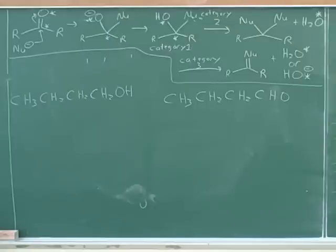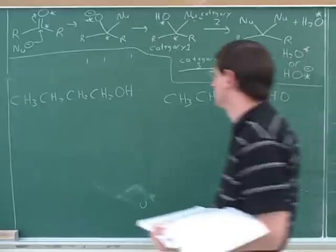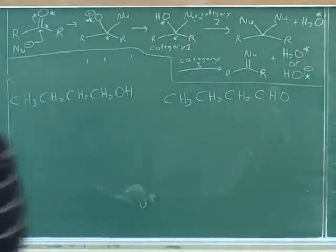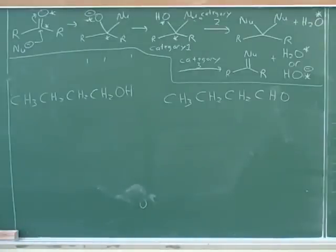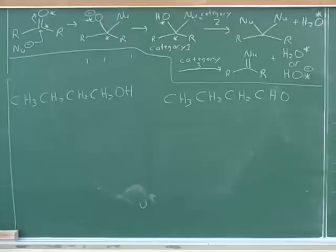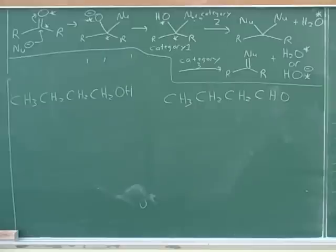One has an OH group and the other has an aldehyde — as we were just talking about, CHO is short for aldehyde. They both have double bonds. That's what you would have to differentiate. Does mass make a difference? They might have slightly different masses. I suppose you could use mass spec, because one of them has one fewer hydrogen than the other, so we could use mass spec just to find the molecular weight.